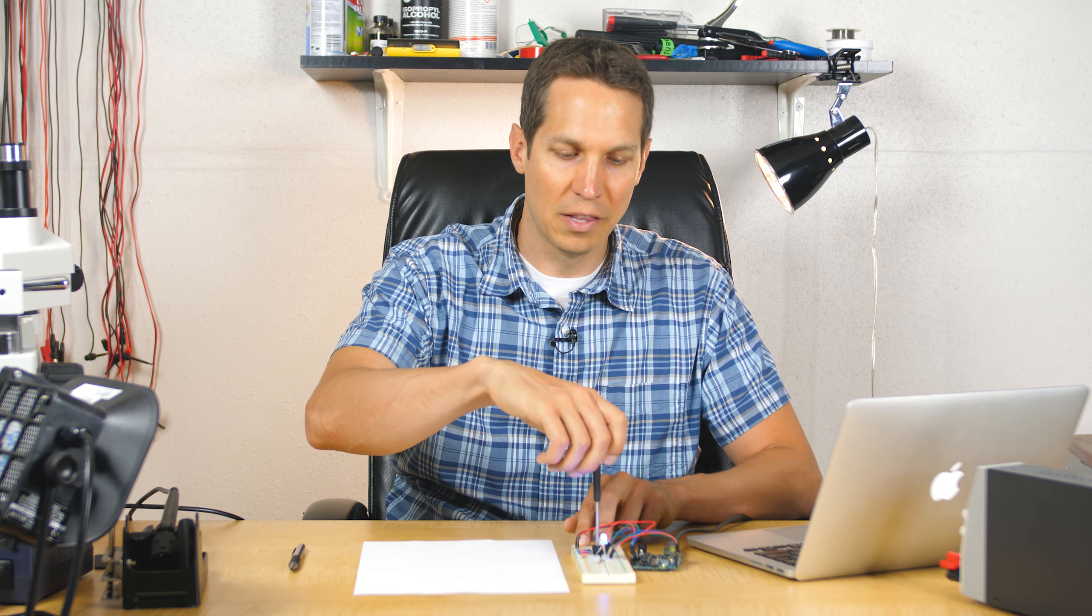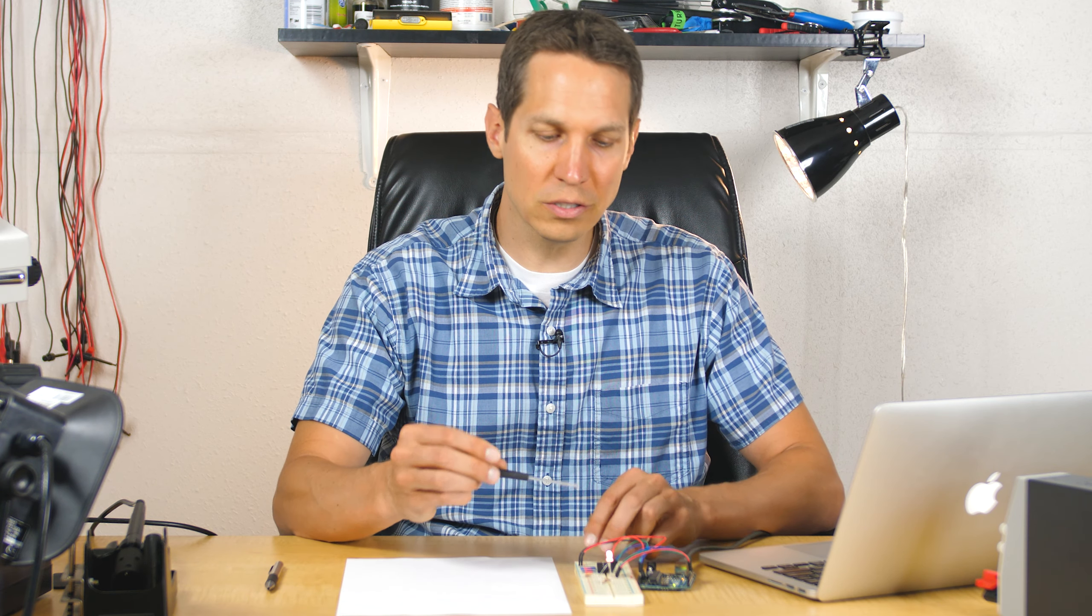But if I turn on the red and then turn on the blue, you can see it doesn't make that much of a difference. And if I turn blue on all the way, red on all the way and green on all the way, you'd expect a fairly pure white light, but I'm getting a very red tinge on this. And so what's going on?